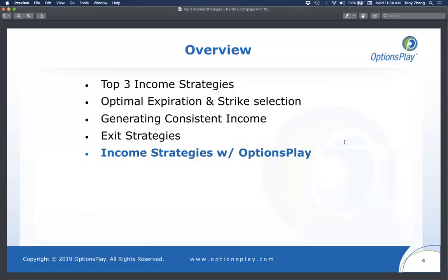Today I'm going to cover three things: the top three income strategies — covered calls, cash secured puts, and credit spreads. Before I get started, I just want to get a sense for the audience. If you've only sold covered calls, please type one into the chat window. If you've sold covered calls and cash secured puts, type one and two. If you've sold all three including credit spreads, type one, two, and three. If you've never traded any of these strategies, please type zero. Once I introduce the strategies, I'll discuss optimal expiration dates and strike price selections for each, because they are quite different.